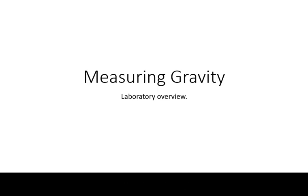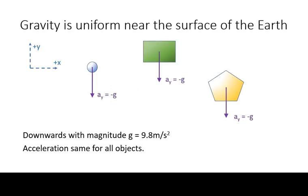Gravitational acceleration is the rate at which objects gain speed as they fall downwards. This can be approximated as being uniform near the surface of the Earth. By definition, it's always downwards and has a magnitude of approximately 9.8 meters per second squared. This acceleration is the same for all objects.